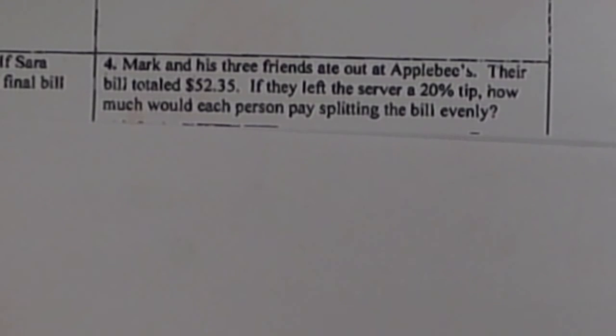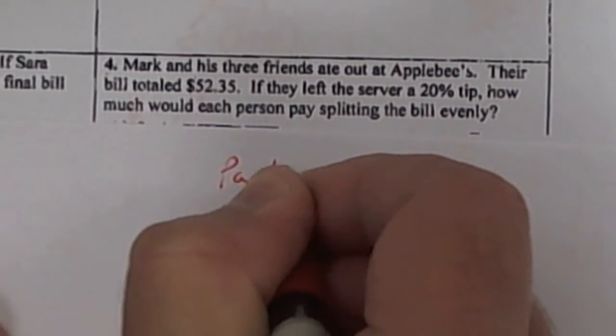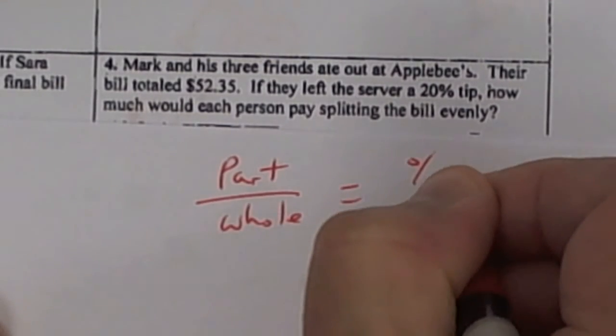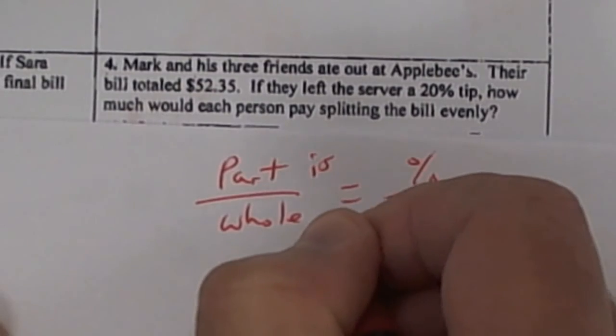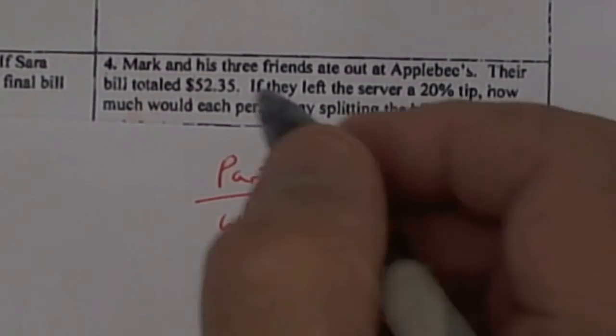Let's figure out what the whole bill is. First of all, to do that, you have to first figure out the tip. So it's part over whole equals percent over 100.